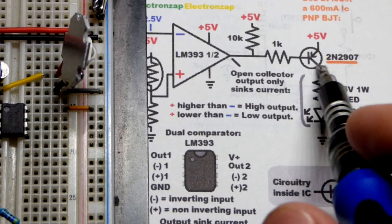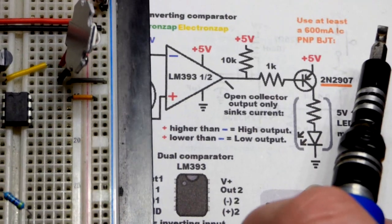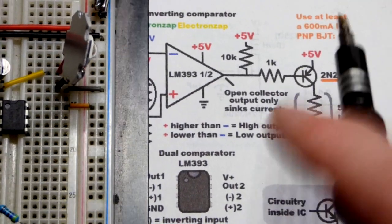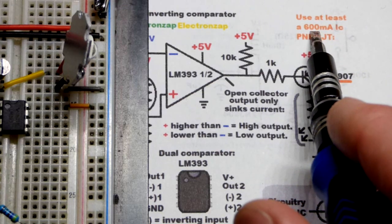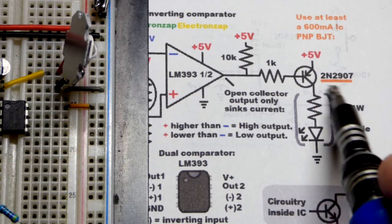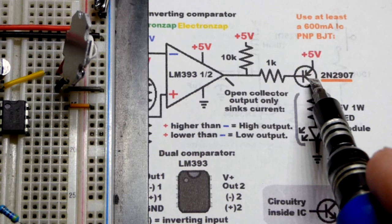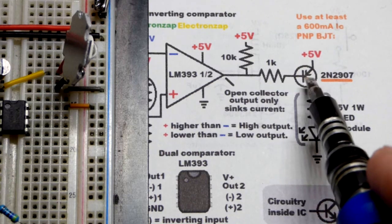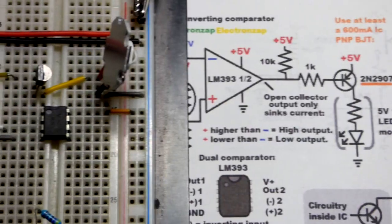We're going to use the PNP bipolar junction transistor. Since this exceeds 200 milliamps of current, we're going to round up to 300 milliamps. We want a transistor that can handle about 600 milliamps when you switch it. So the 2N2907 can do that. It's like the 2N2222, which is an NPN bipolar junction transistor, but it's the opposite chemistry. Current flows through it in the opposite direction.